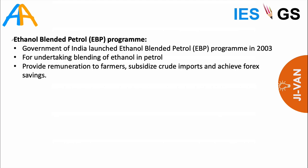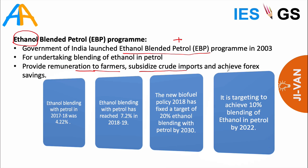Biomass is converted to ethanol through fermentation. Ethanol is an alcohol that can be blended with petrol to make ethanol-blended petrol for use in vehicles. The government encourages ethanol blending through a National Ethanol Blending Program launched in 2003. Benefits include remuneration to sugarcane farmers, reduction in crude imports, reduced fossil fuel consumption, foreign exchange savings, and reduced import bills.